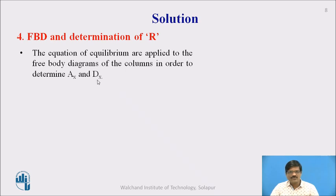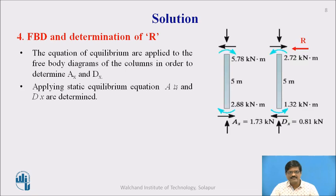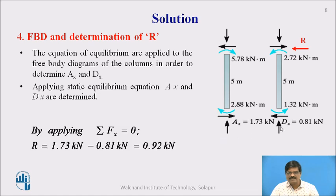The equations of equilibrium are applied to the free body diagram of the columns to determine AX and DX, which are the shear forces. We got the end moments for these members in the previous steps. From the free body diagram, we can calculate the value of R. AX we get as 1.73 kN and DX we get 0.81 kN. By applying the equilibrium conditions, we get the restraining force R as 0.92 kN.